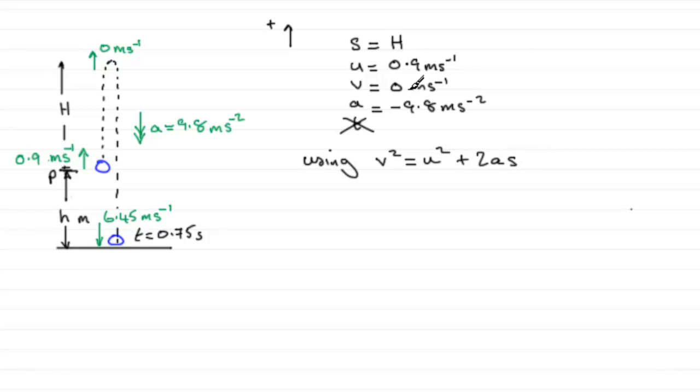So what is V? Well we can substitute that in. We got 0 then equals U squared, that's 0.9 squared plus 2 multiplied by the acceleration which is minus 9.8 multiplied by S which is the H. So what we've got here then is therefore 0 equals, and if you square 0.9 you've got 0.81 and 2 times minus 9.8H is going to give you minus 19.6H.